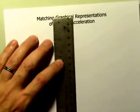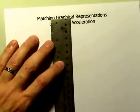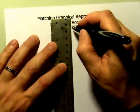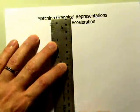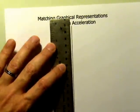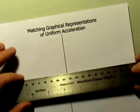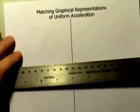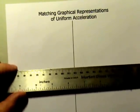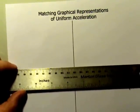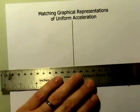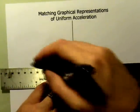So we just looked at speeding up in the positive direction. Let's look at speeding up in the negative direction. And so what I would like to do is take the full sheet of paper and break it up into three sections.